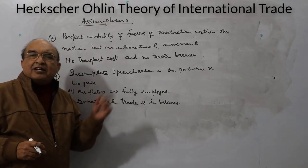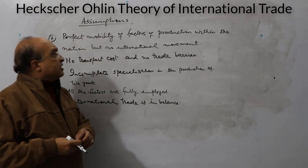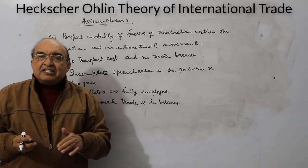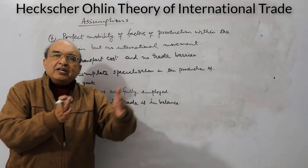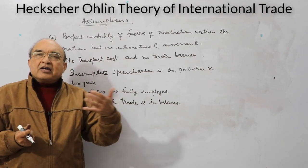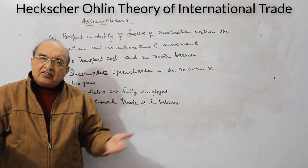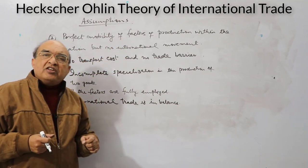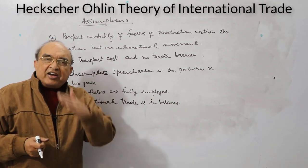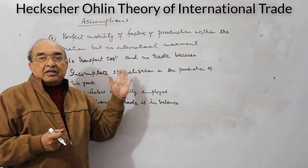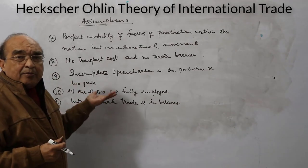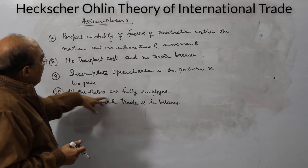Another assumption is perfect mobility of factors of production within each nation, but no international movement of these factors. Within the nation, factors can move from one production facility to another. However, if international movement of factors were allowed, it would disturb the cost position of the two nations — which is why cross-border factor mobility is not allowed in this model.